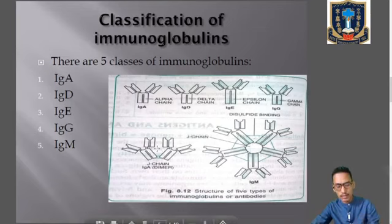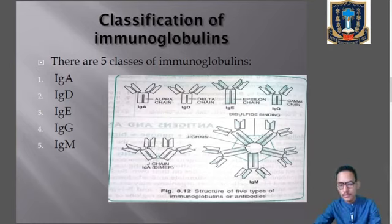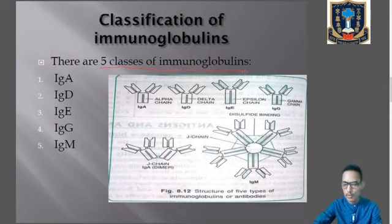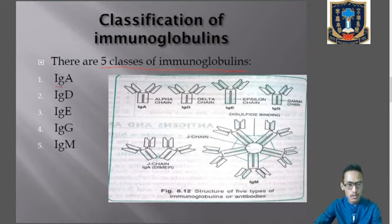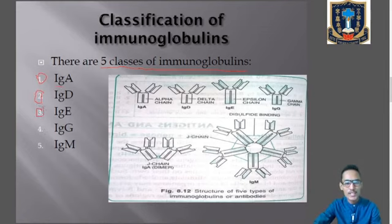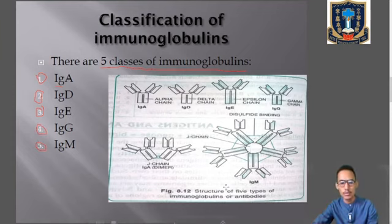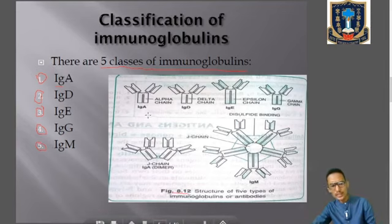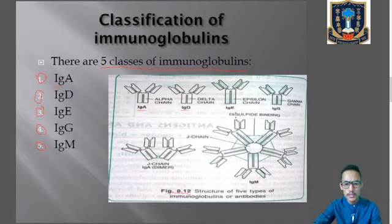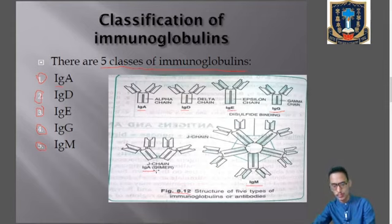Next, we will discuss the classification or types of immunoglobulins. Due to the presence of variable regions, there can be different types of antibodies. There are five classes of immunoglobulins — where 'Ig' stands for immunoglobulin. You can also refer to figure 8.12 from your textbook. The five types are: IgA, IgD, IgE, IgG, and IgM.